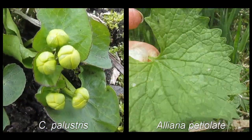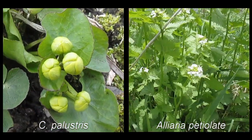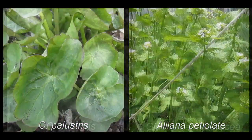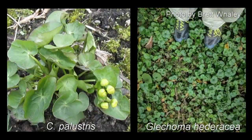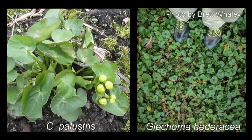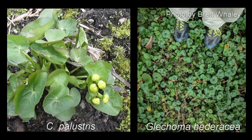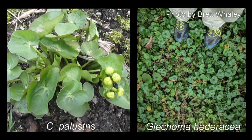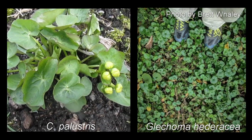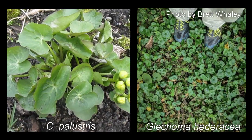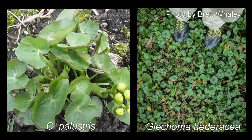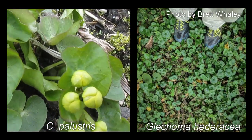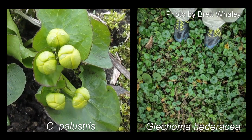During their second year of growth, garlic mustard shoots up to four feet tall with small white flowers. Creeping charlie, Glechoma hederacea, has crenate leaves as marsh marigold does, however they are smaller. It grows on dry woodland floors, often in dense mats unlike marsh marigold, and has small purple flowers.